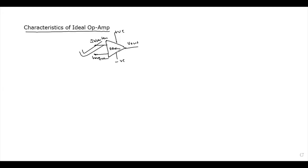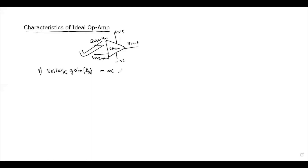Now write down the characteristics of the ideal operational amplifier as a side heading. Characteristics of ideal operational amplifier. First characteristic: voltage gain. The voltage gain is denoted with A suffix V. Voltage gain, A suffix V, is infinity.